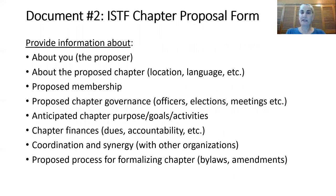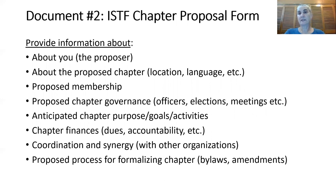Chapter two is the proposal form — a way to collect information that will help form and write the bylaws. It includes information about you the proposer, the proposed chapter, proposed membership, and the governance structure with officers, elections, meetings, anticipated chapter purposes, goals, activities, chapter finances, dues or not, and accountability for how things are spent.